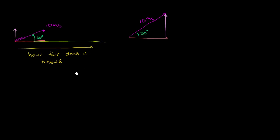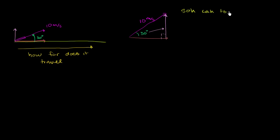Let's do the vertical component first. We know the hypotenuse of this right triangle and we know the angle. The vertical component is opposite the angle, so we want the opposite side given the hypotenuse. We write down SOHCAHTOA — sine is opposite over hypotenuse.